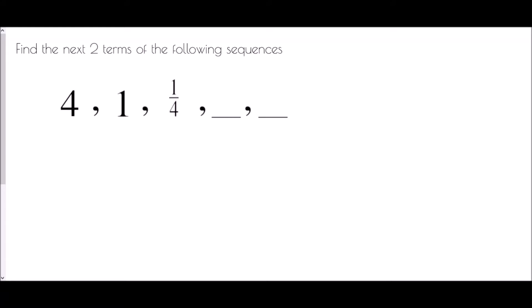A reminder that the key element of a geometric sequence is that from each term to the next you are multiplying by the same common ratio — the r value. So what have we multiplied to turn one term into the next? What have I multiplied four by to get one? The quickest way to work out the multiplier is to take the second term, in this case one, and divide it by the previous term. One divided by four is a quarter, so we've multiplied by one quarter.